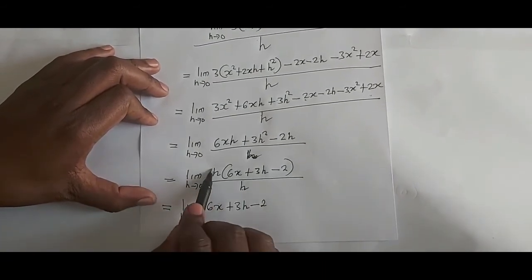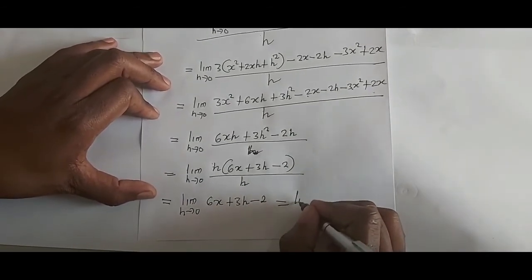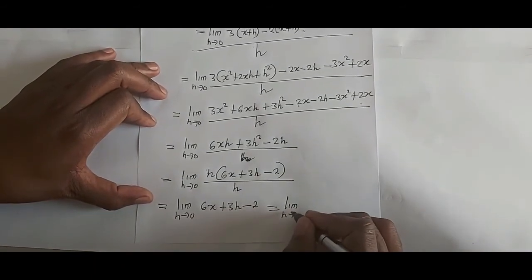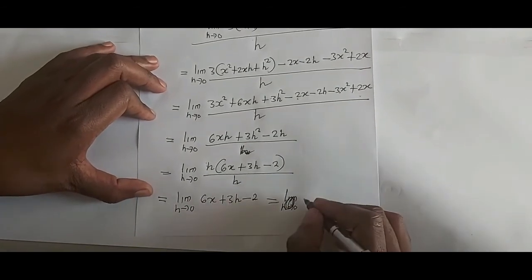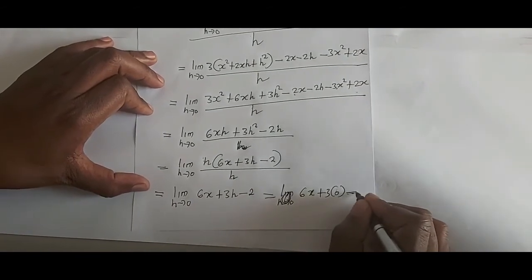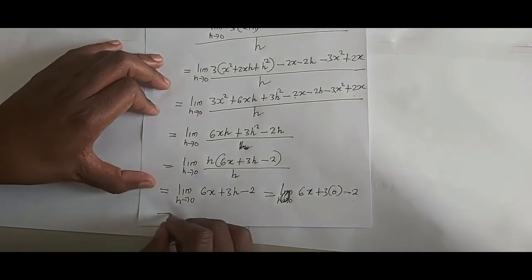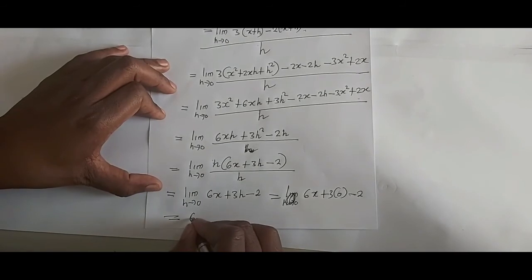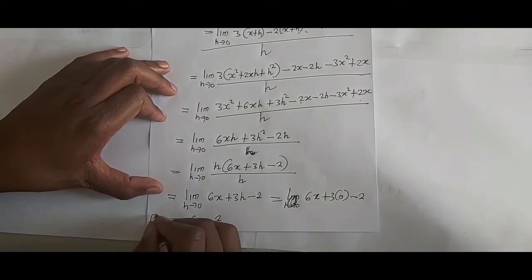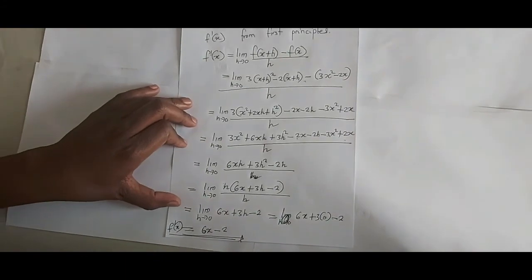The h cancels with h, and then h becomes 0. So it becomes 6x plus 3 times 0 minus 2. Therefore the final answer is f dash of x equals 6x minus 2. Thank you so much, God bless you.